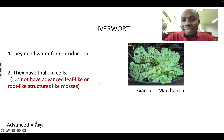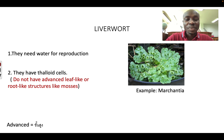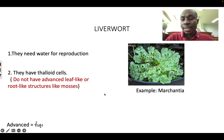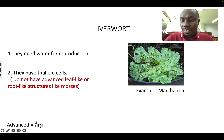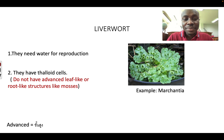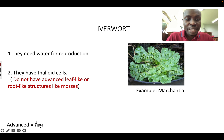Now let's look at liverworts. Just like mosses, liverworts also need water for reproduction — the sperm has to swim to the egg, so they always need water. But they have thalloid cells, and their cells are not as advanced as in mosses; they are just simple, very simple. The example we will look at today is called marchantia.